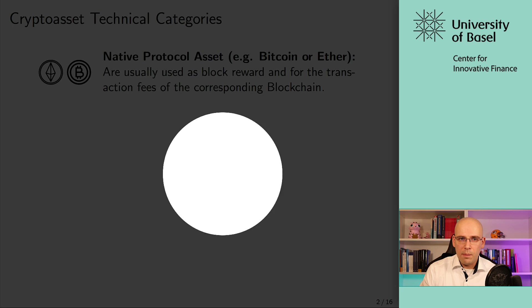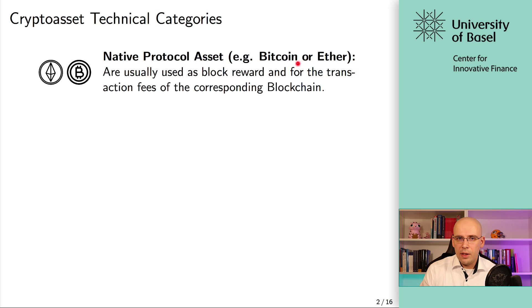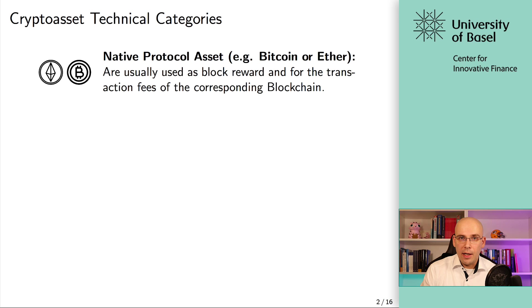The first type are called native protocol assets. These are things like Bitcoin, like Ether, and they are usually used as a block reward and to pay for transaction fees on that blockchain. These are really the cryptoassets that are part of the blockchain's incentivization scheme and essentially part of the blockchain itself. So that's not really a token — it's a native protocol asset. In many cases it's also referred to as a cryptocurrency, but I personally think the term native protocol asset is much more precise.